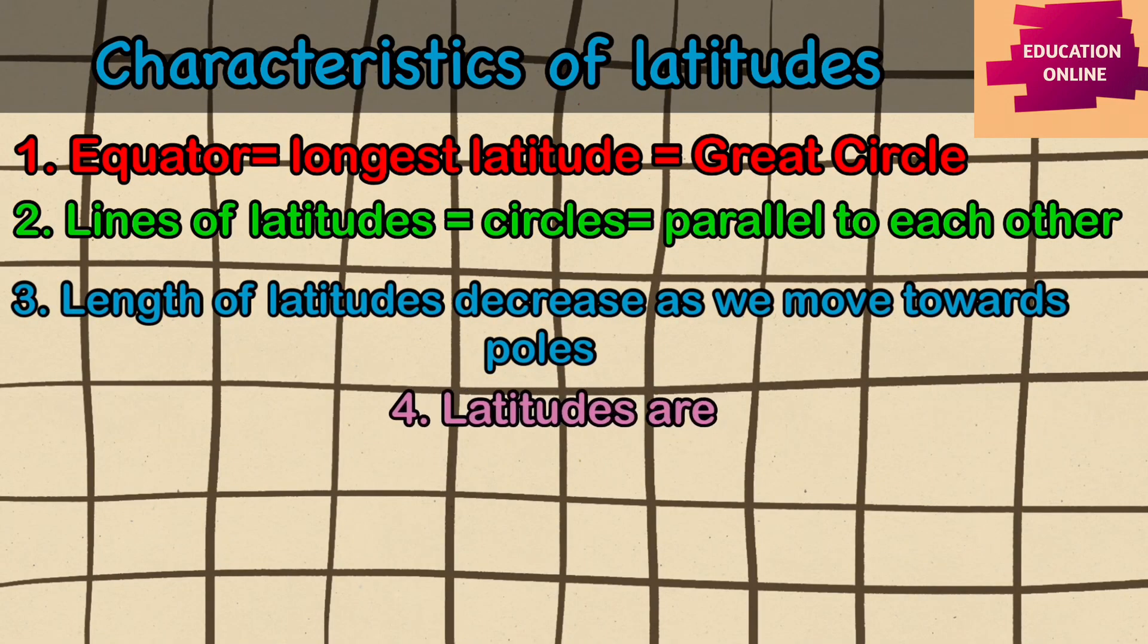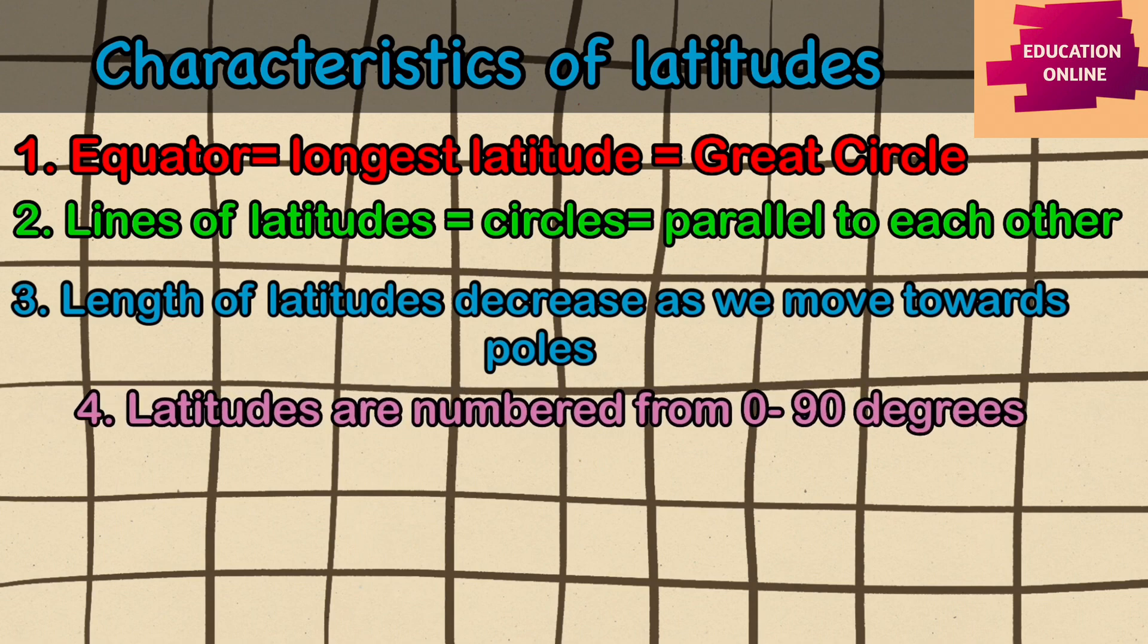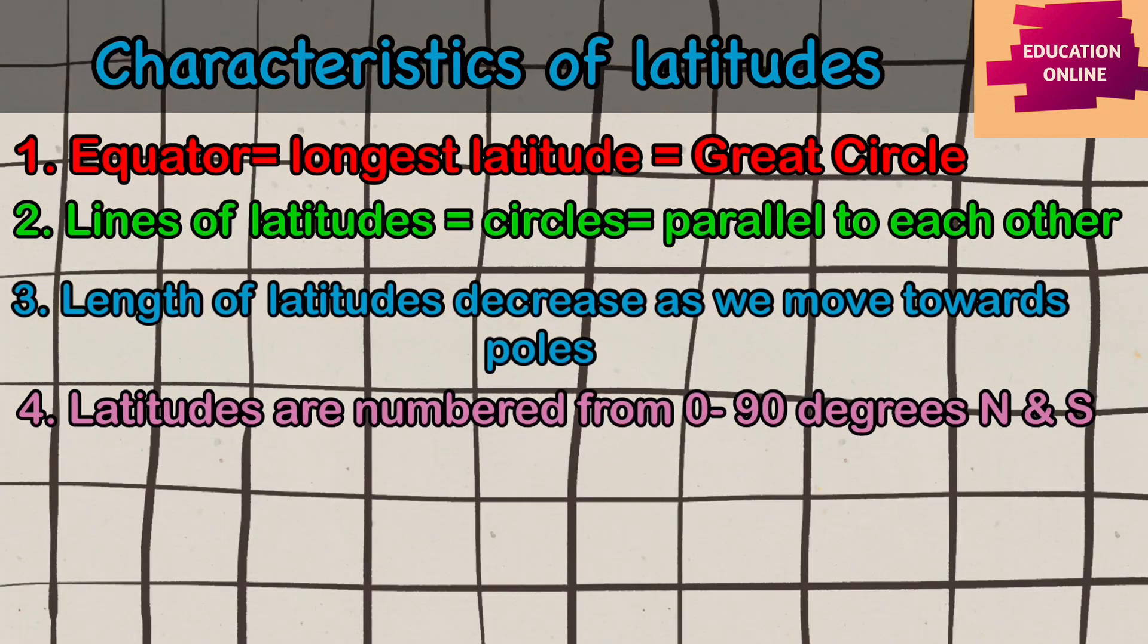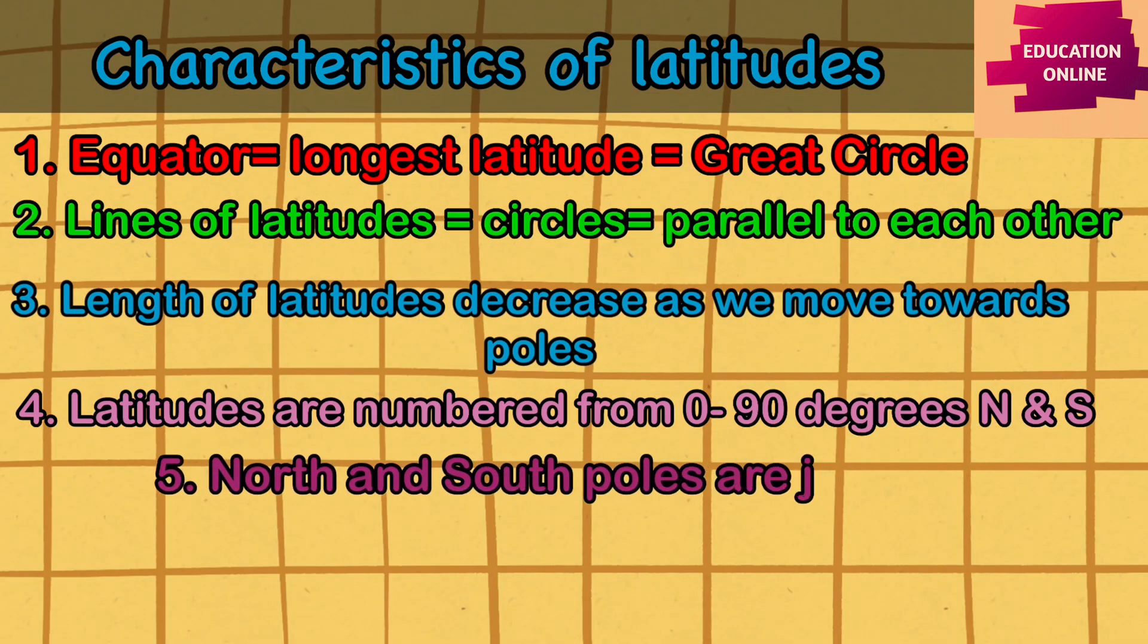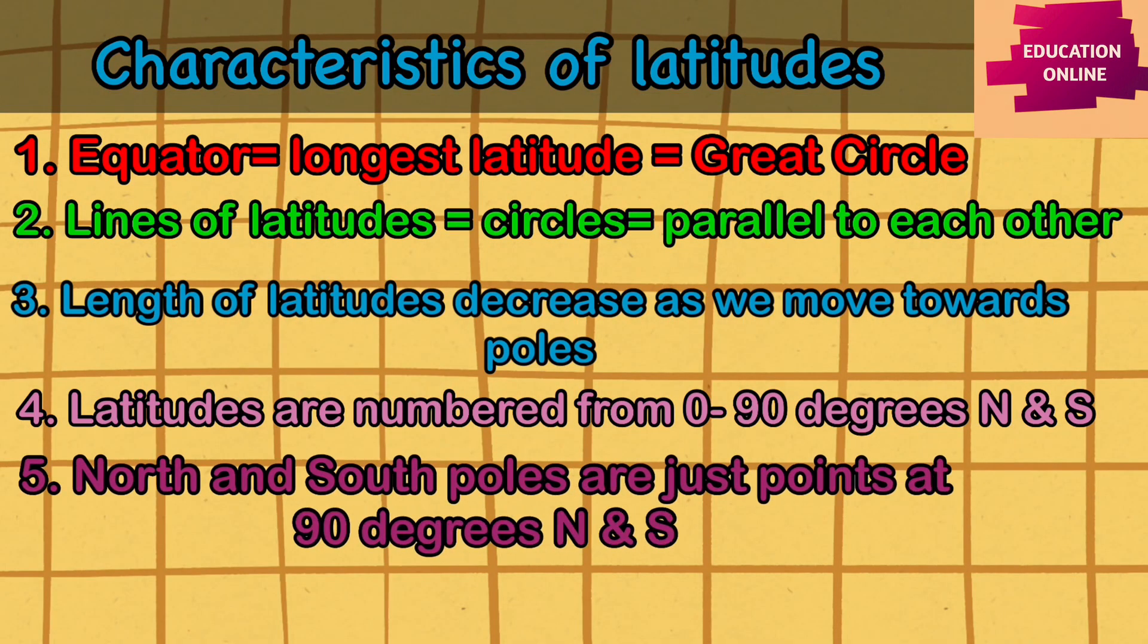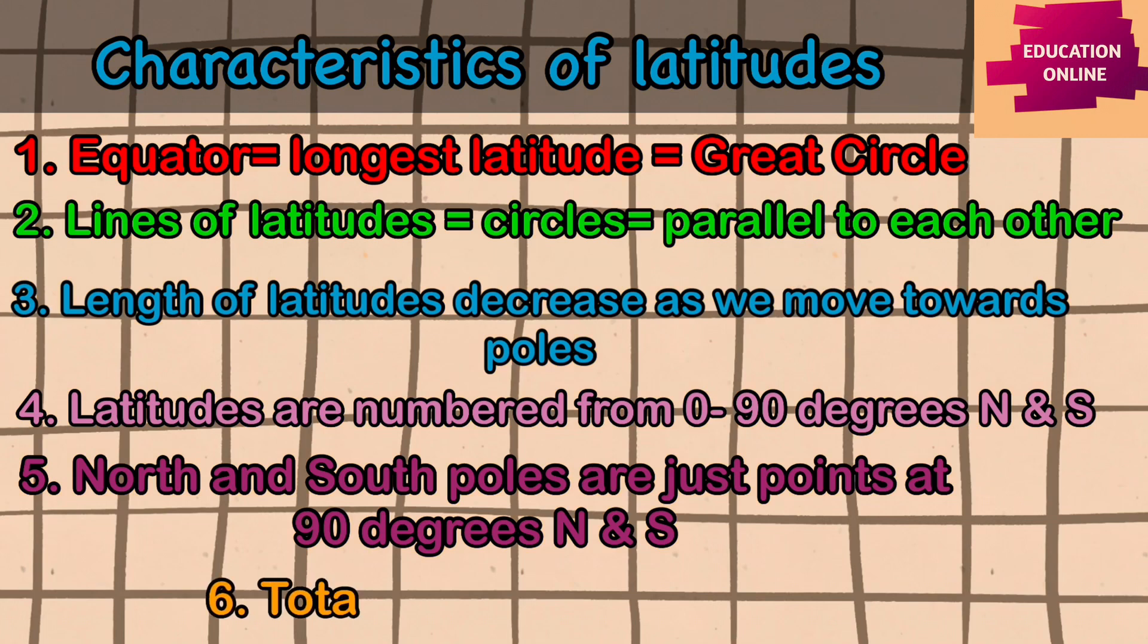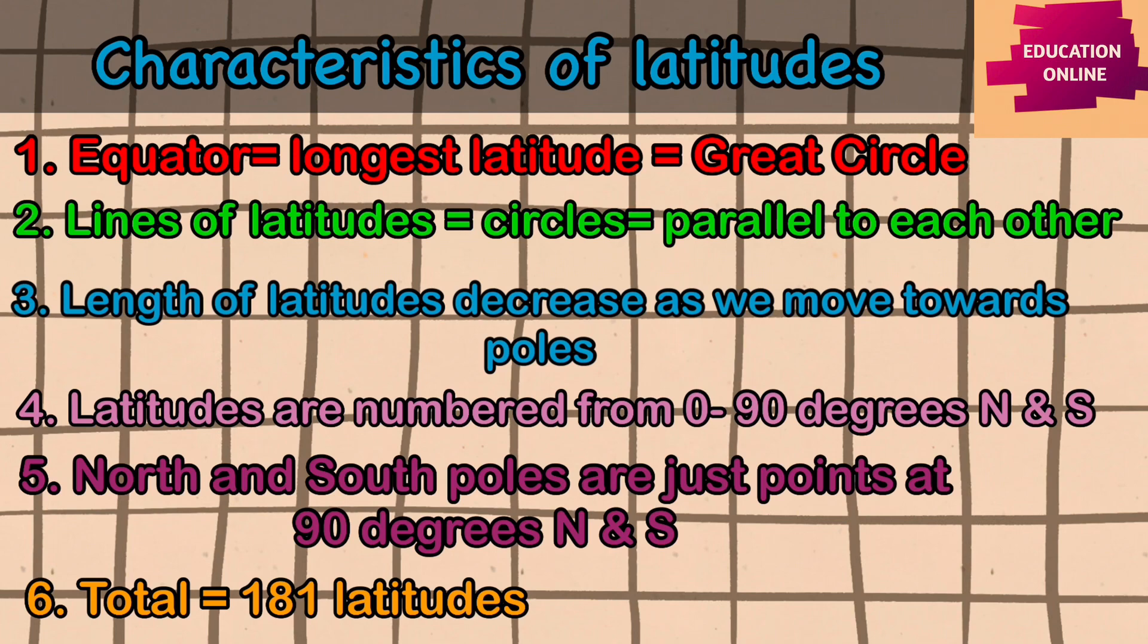The latitudes are numbered from 0 to 90 degrees. The equator is at 0 degree and the degree of other latitudes keep increasing as we move towards the poles. The north and south poles are at 90 degree latitude, which are just shown as points on the map. Apart from the equator, there are 180 parallels of latitude.